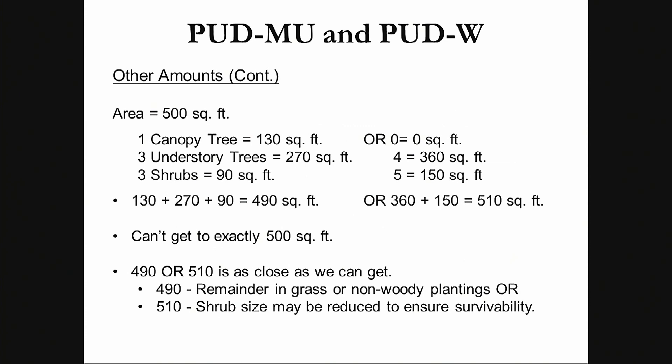For an area of 500 square feet, we can't get exactly to 500 square feet in terms of plantings — 490 or 510 square feet is as close as we can get. If they chose 490, using the canopy tree which we want them to use when they can, the remainder would be in grass or non-woody plantings. If they went over to 510 square feet, we would allow them to reduce the shrub size to ensure survivability. We require that shrubs be at least six feet in height at maturity, but to ensure survivability, we would probably allow smaller shrubs in that case.